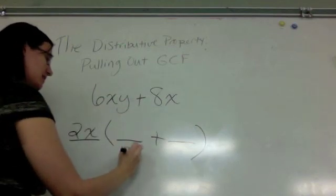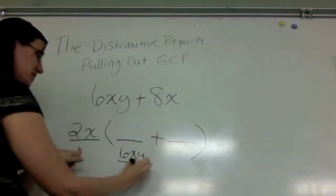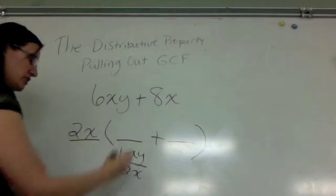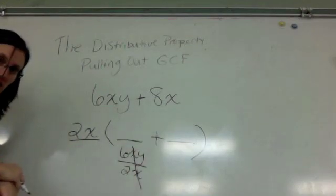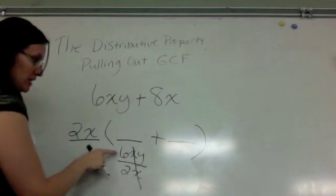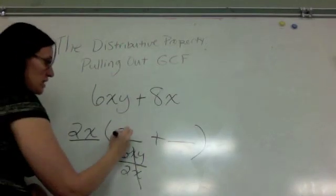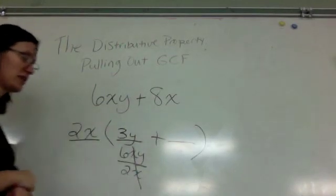Now I need to take 6xy, my first term, divided by my greatest common factor. The x's will cancel, because when you have the same thing on top and bottom, you cancel. And 6 divided by 2 is 3, and I still have a y, so that's 3y.